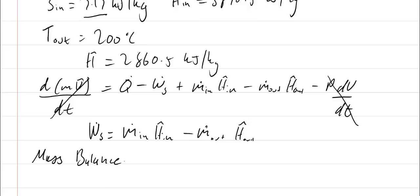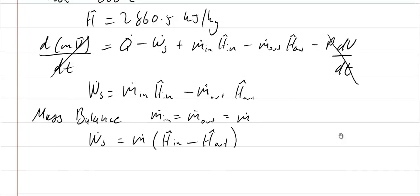From my mass balance at steady state with no reactions, my mass in is equal to my mass flow out, so I can say that my work is equal to the mass going through the system times H_in minus H_out.